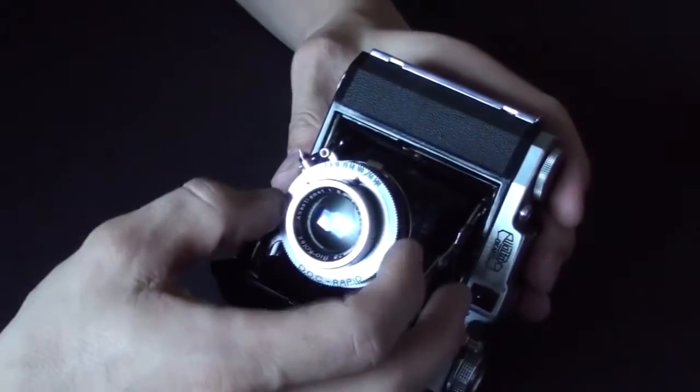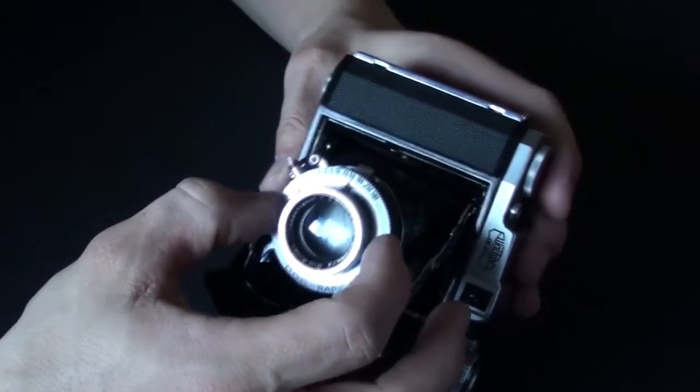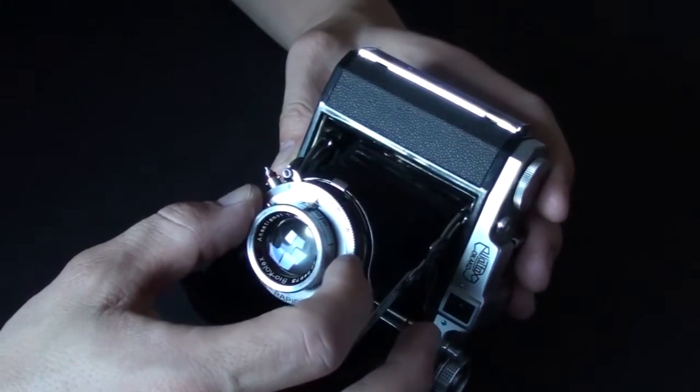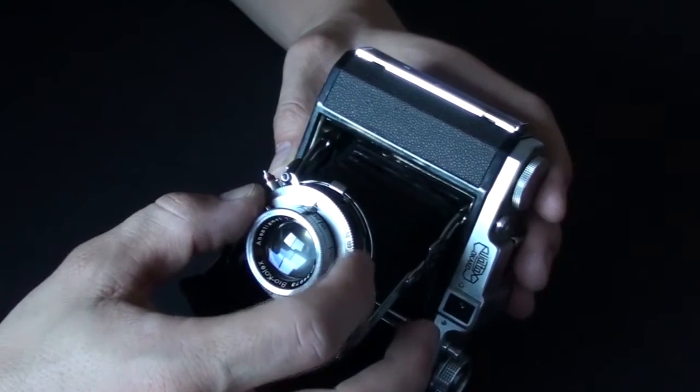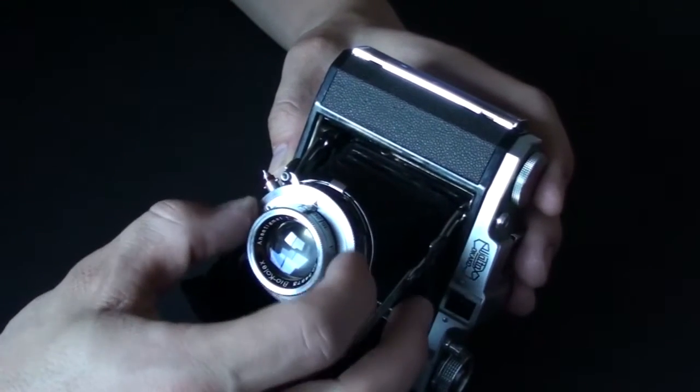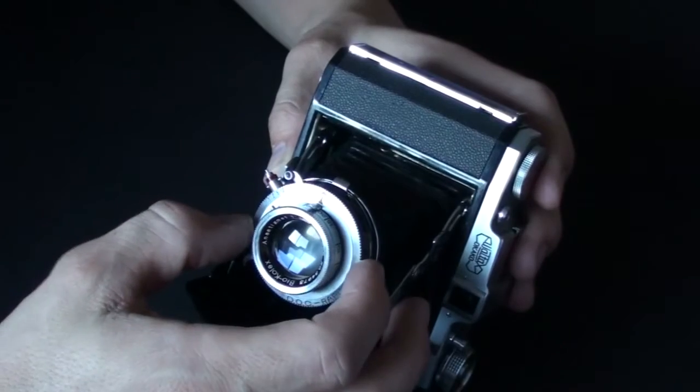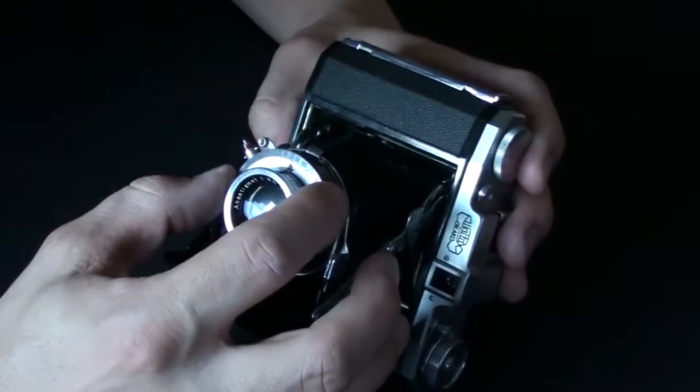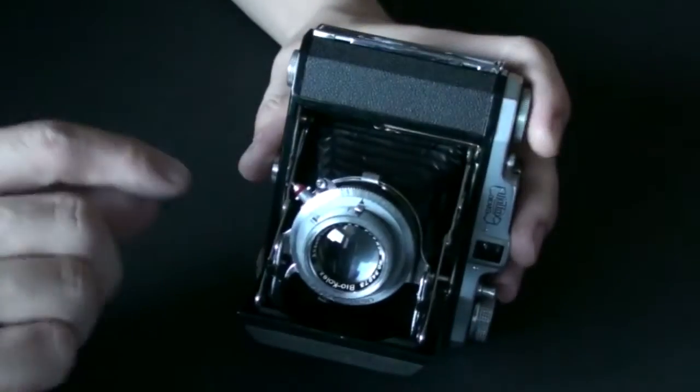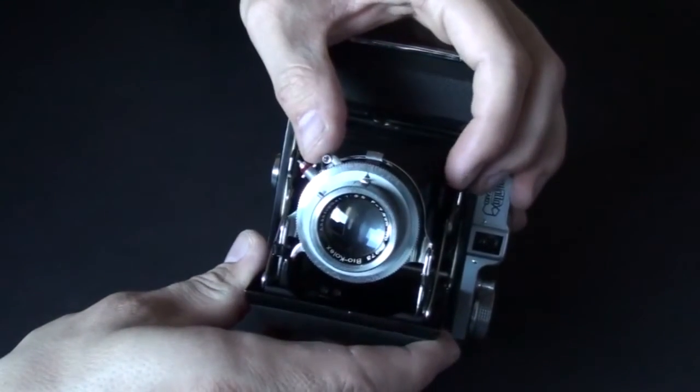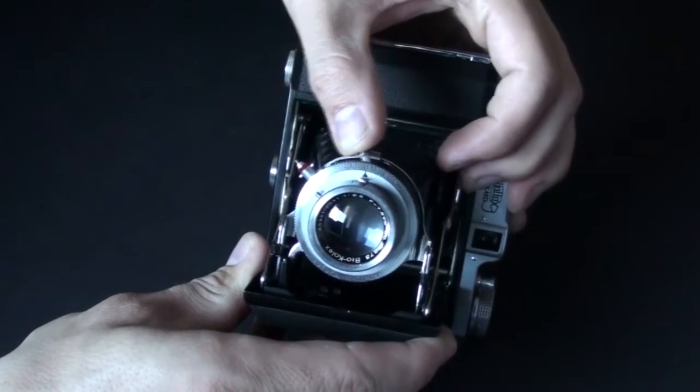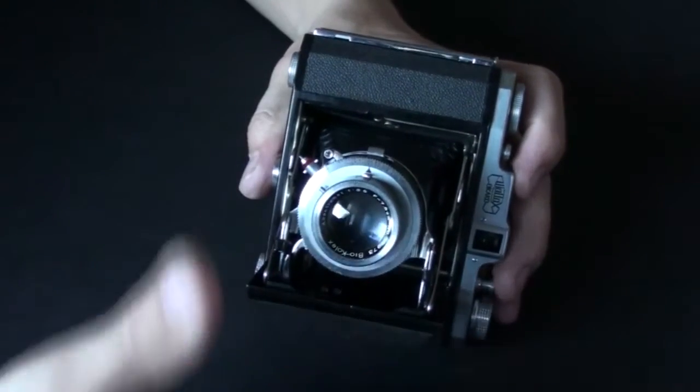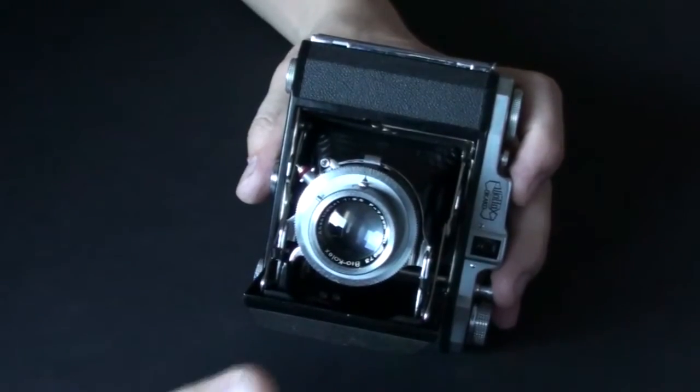And over here, you use the knurled dial to select the shutter speed. And the shutter speeds vary from 1 second all the way up to 500 of a second. And let's listen to the beautiful sound of a shutter on this camera. It doesn't get any better than that.